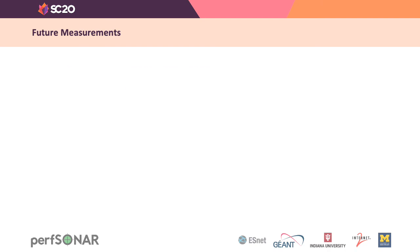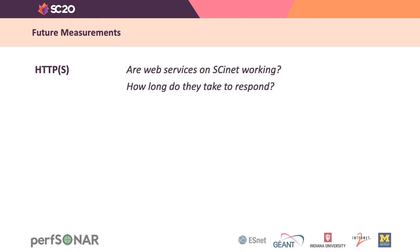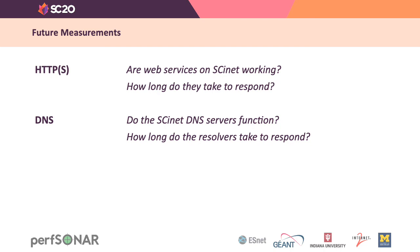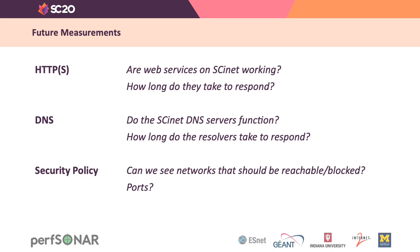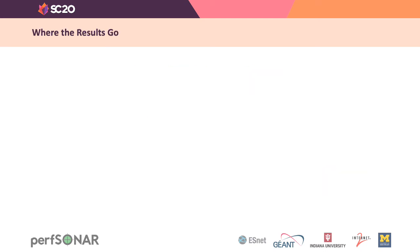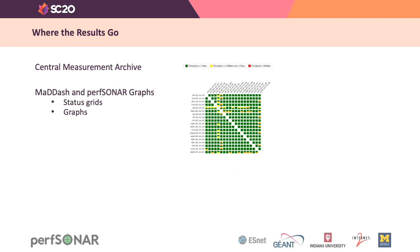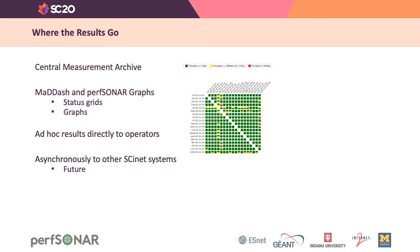We have lots of options for the future as well. PerfSonar has facilities for measuring HTTP response time, so we can check whether web services on SCinet are working and how they're performing. We can do the same for the domain name service. Additionally, there's work underway on PerfSonar to use it to audit security policy, so at a future conference we'll be able to see whether networks that should be reachable are reached or blocked, and we'll be able to do the same with ports. All measurement results are fed to a central measurement archive, which feeds MadDash and the PerfSonarGraphs package. PerfSonar can also send its results asynchronously to other SCinet systems, and other parts of the SCinet team are aware that we can do this.